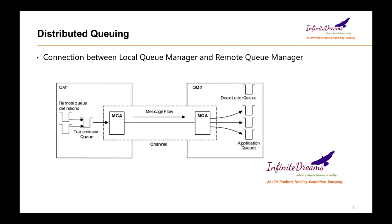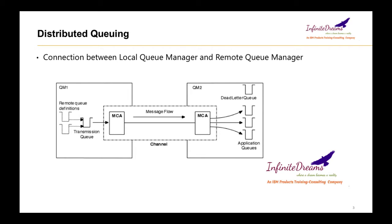Distributed Queuing can be understood with this diagram. As you can see, there are two queue managers, QM1 and QM2. These two queue managers will be in different systems. Let us assume this queue manager is in some local system — so I can call it the local queue manager — and this queue manager is installed in some different host, so I can take QM2 as the remote queue manager.